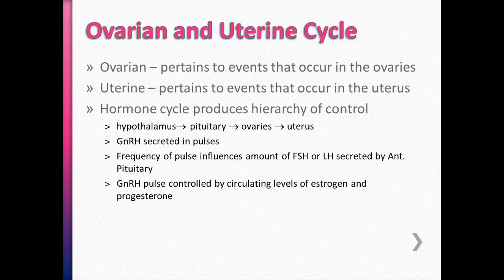To help follow this, keep in mind that the hormones have a hierarchy of control: the hypothalamus controls the pituitary, which controls the ovaries, which controls the uterus. GnRH is a hypothalamic hormone — gonadotropin-releasing hormone. When secreted in pulses, it influences the anterior pituitary hormones FSH and LH. FSH is follicle-stimulating hormone; LH is luteinizing hormone. Those pulses influence how much FSH and LH are secreted, and then FSH and LH control how much progesterone and estrogen the ovaries secrete. Those progesterone and estrogen levels then have a negative feedback effect on GnRH.